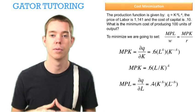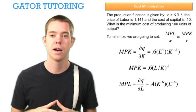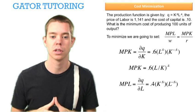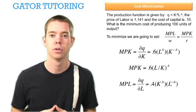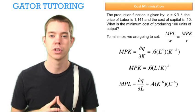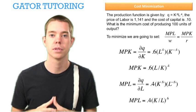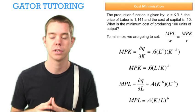Taking the derivative of the production function with respect to L gives us the marginal product of labor. This works out similarly to the marginal product of capital, just with different variables and numbers. We can simplify this to 0.4(K/L)^0.6.